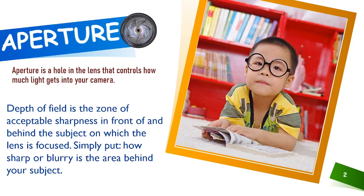Depth of field is the zone of acceptable sharpness in front of and behind the subject on which the lens is focused. Simply put, how sharp or blurry is the area behind your subject?